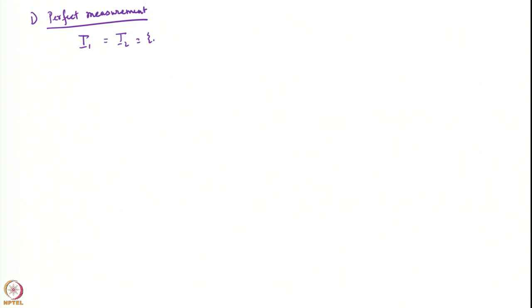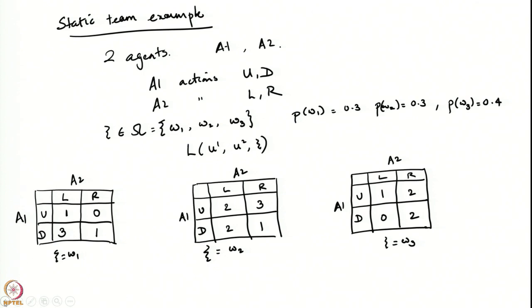These are all static problems, just different types. In Case 1, both agents have perfect measurement, meaning the information of each agent — I1 for agent 1 and I2 for agent 2 — are both equal to psi. So both agents actually observe psi directly. Since they know the value of psi, we want to minimize the expectation of the cost, where u_i is a function of the information of agent i.